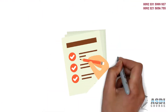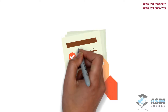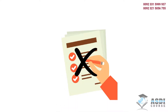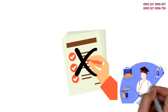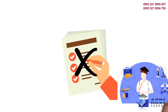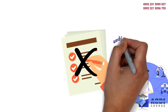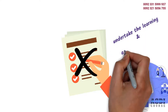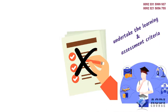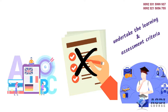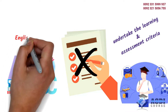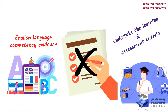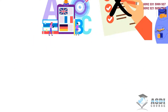OTHM does not specify entry requirements for these qualifications. OTHM ensures that learners admitted to the program have sufficient capability at the right level to undertake the learning and assessment criteria. If a learner is not from a majority English-speaking country, they must provide evidence of English language competency.